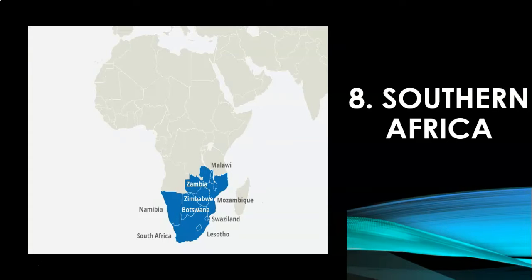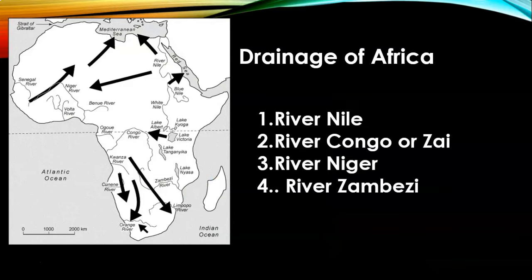Drainage of Africa. River Nile. The Nile is the longest river in the world, with a length of 6,650 kilometers. It has two main tributaries: the White Nile, which originates from Burundi, and the Blue Nile, which originates from Ethiopia. It flows northward and drains into the Mediterranean Sea. The Nile is known as the 'father of African peoples.' Do you know Egypt is called the 'gift of the Nile'? It is the lifeline of Egypt — without the Nile, Egypt would have been a desert.